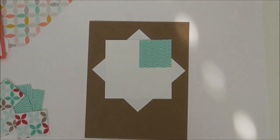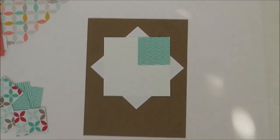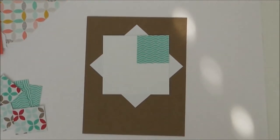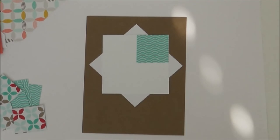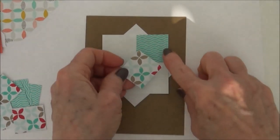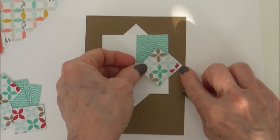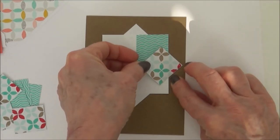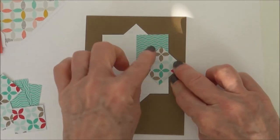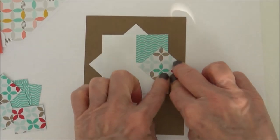Then we're going to take a little bit of adhesive on the next pattern piece. And then we're going to line this up on an angle with the triangular shape. I think you're starting to see where I'm going with this.